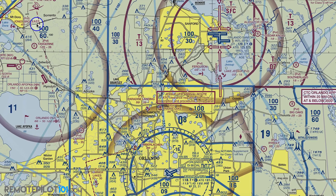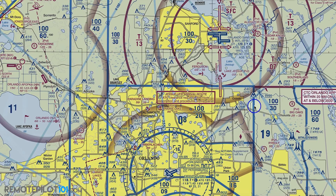I love using the Orlando area because we can accomplish just about everything airspace-wise. Solid blue line is Class B airspace. Solid magenta line is Class C — Class Charlie airspace.